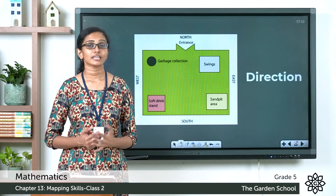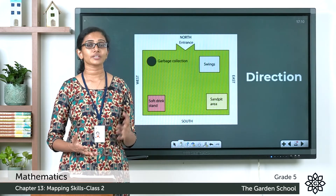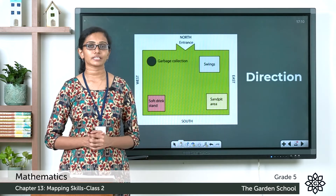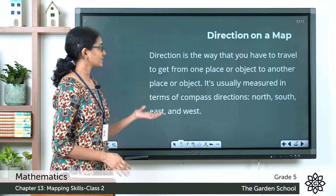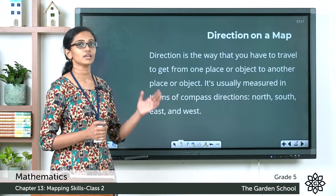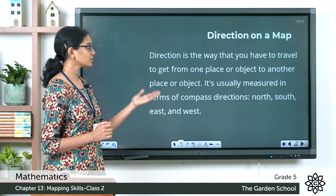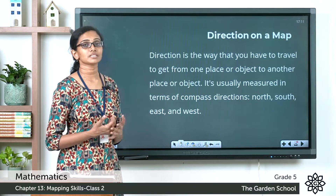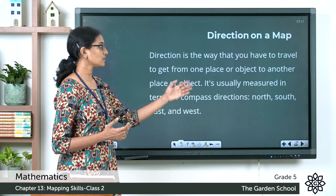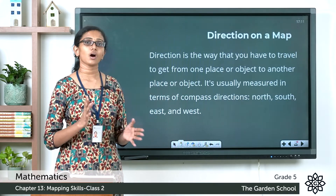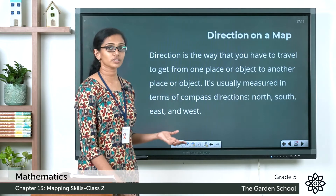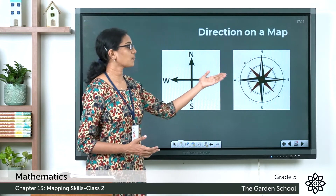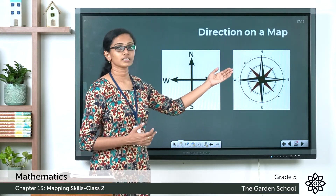So what do you mean by direction? Direction is the way you have to travel to get from one place or object to another place or object, and it is usually measured in terms of the compass directions or the four cardinal directions: north, south, east, and west. On a map, directions are shown using an arrow, a cross, or some kind of pointed star, which shows the north direction.